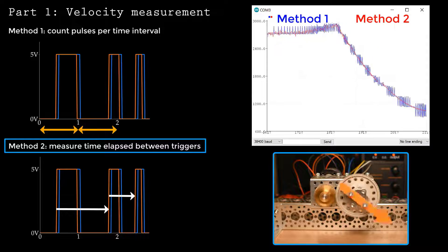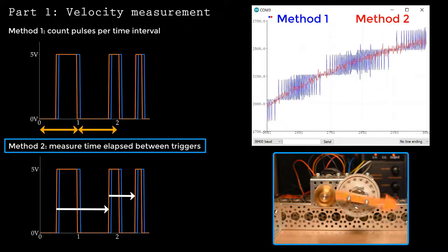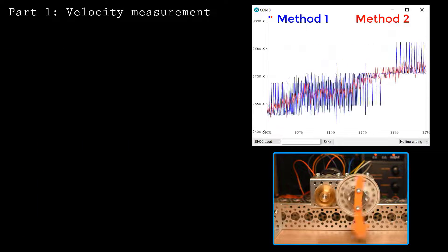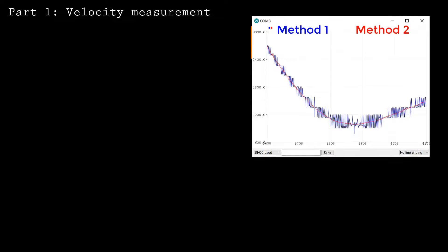So far, we've computed the speed using two different methods. However, the speed is measured in units of encoder counts per second. For most practical applications, you'll want to use standard units, like rotations per minute.